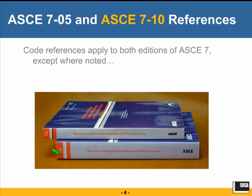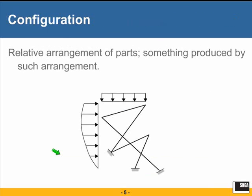We have on every slide pretty much the relevant section numbers, which we always feel help you find the right things in the code. The section numbers on most slides will work with both ASCE 7-05, which most of you are using now, and also with ASCE 7-10, which has been adopted by the 2012 IBC. Those will be the section numbers when 2012 IBC is adopted by the jurisdiction, which probably is in the near future. In rare cases where ASCE 7-05 and ASCE 7-10 section numbers are different, we clearly indicate that on the slides.